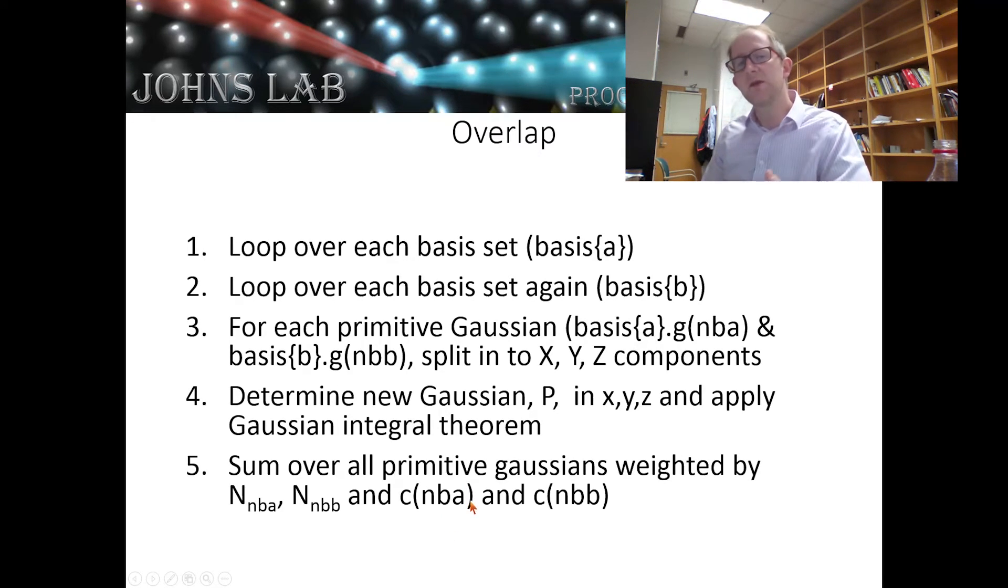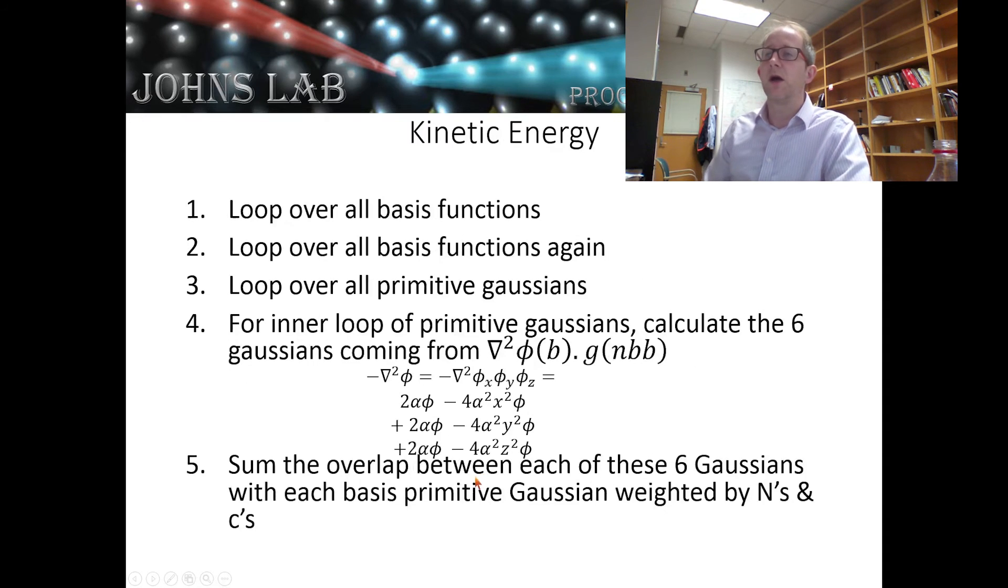The kinetic energy matrix is very similar. We're going to loop over all basis functions, loop over them all again, so we have a double for loop. Then we have another set of for loops over the primitive Gaussian functions.